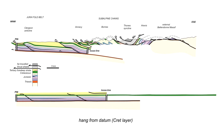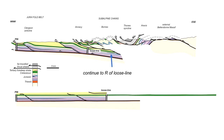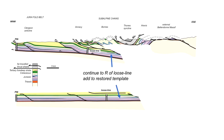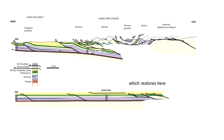Continuing to the right of the loose line, our markers are not too bad, so we re-hang them in. We now look at this part of the cross-section, which will restore along the dark green Cretaceous marker. Some markers are added to correlate hanging wall and footwall across a major thrust that emerges in the Annecy area. We can recognize the footwall cut-off of our dark green Cretaceous marker and recognize it in the hanging wall on the cross-section, then put them back together on the restored template.